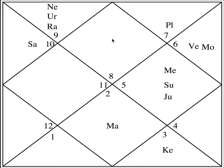Now we have to see where the lord of the ascendant is going. As I said in earlier videos, every house has a ruler. Number eight is the Scorpio sign, which is ruled by Mars. Mars is sitting in the seventh house, in the sign of Taurus — sign number two. This is not the second house; this is the seventh house. The sign number is two. This house will always be the seventh house, this will always be the fourth, and this will always be the tenth house.